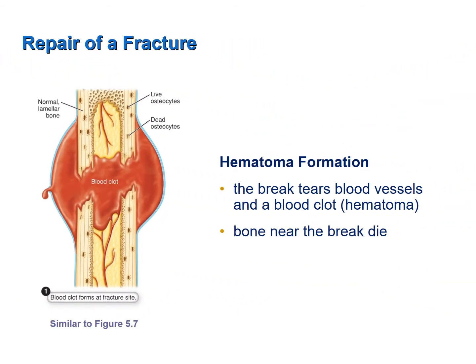Let's now describe the process that occurs in the repair of a fracture. When a bone is broken, blood vessels are severed. Recall that bone is well supplied with blood vessels. The severing of blood vessels causes blood to hemorrhage into the area of the break, causing the formation of a blood clot or hematoma. Nearby bone, now without a supply of oxygen, dies close to the break.